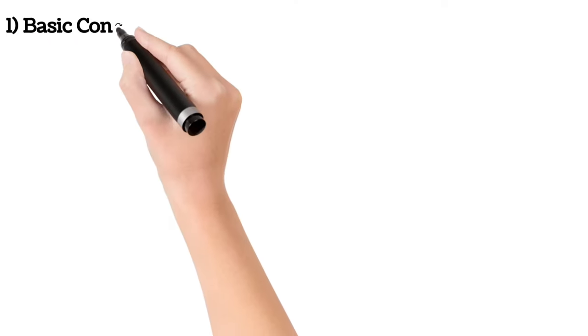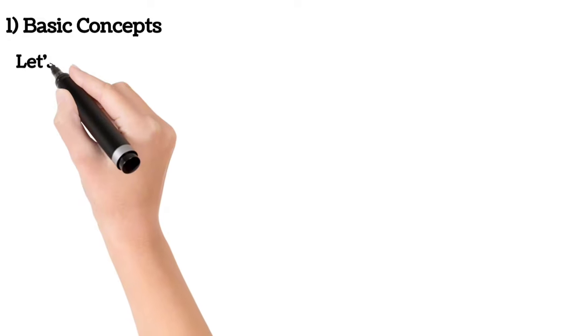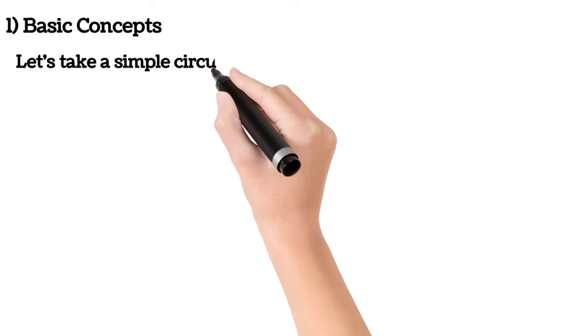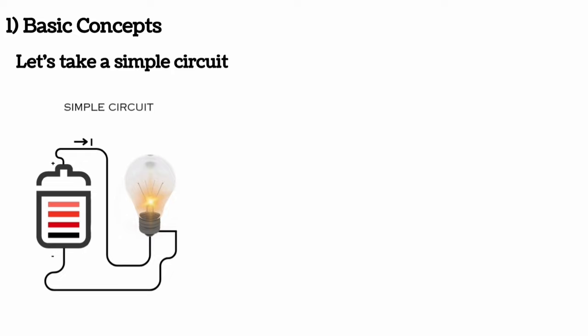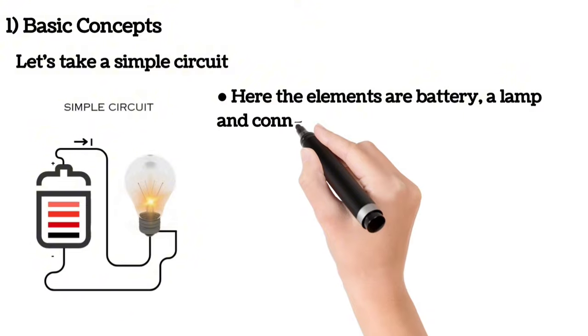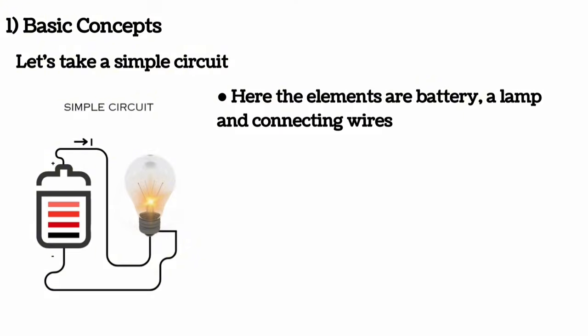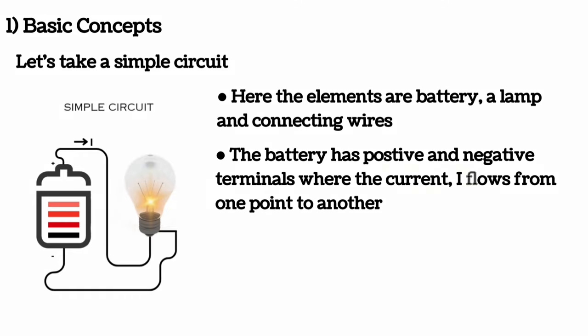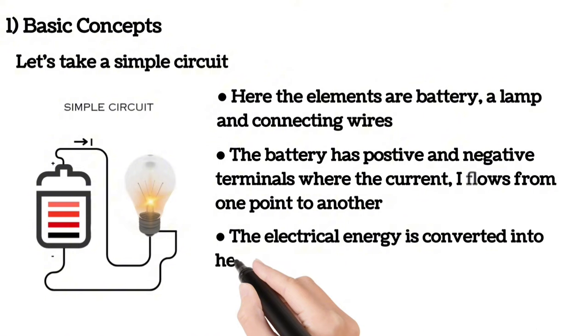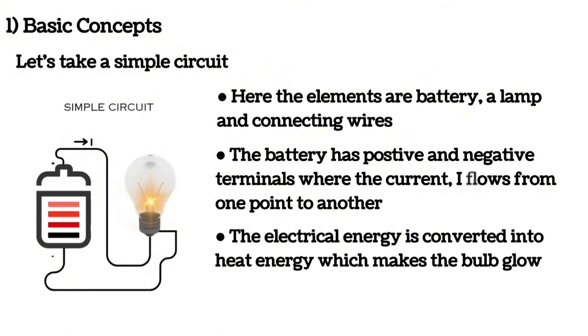Let's look at basic concepts with a simple circuit. Here, a battery and a lamp are connected together through connecting wires, and current I is flowing through the wires. The elements are the battery, the lamp, and the connecting wires. The battery has positive and negative terminals, so current flows from positive to negative terminal. The electrical energy is converted into heat energy, which makes the bulb glow.